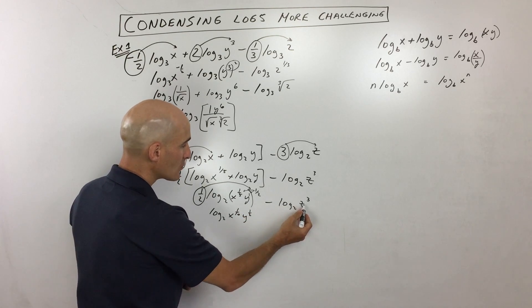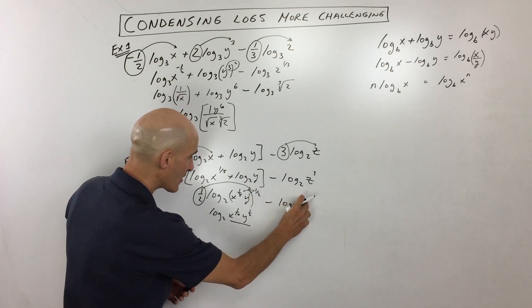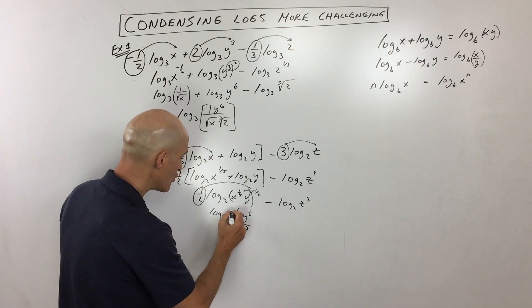And remember, when we subtract, what do we do? We divide, right? So this, whatever you're subtracting, that part is going to go in the denominator. So this is over z cubed.